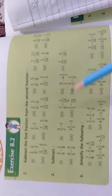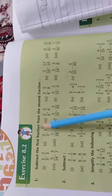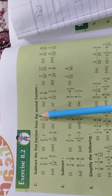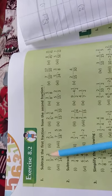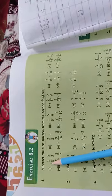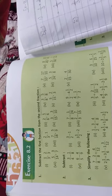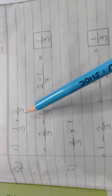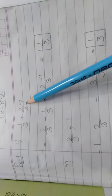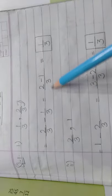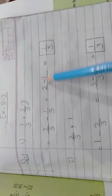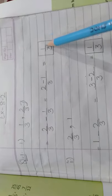This is Exercise 8.2. The first question says: subtract the first fraction from the second fraction. Be careful — you have to subtract the first fraction from the second, not the other way around. The fractions are 1/3 and 2/3, which are like fractions. So we write 2/3 minus 1/3, and the answer is 1/3.